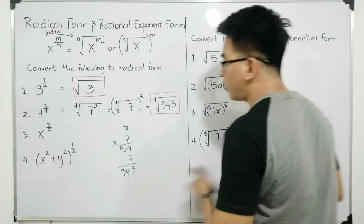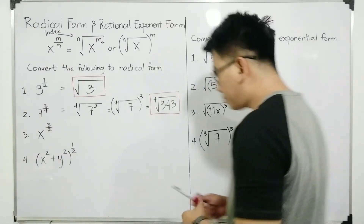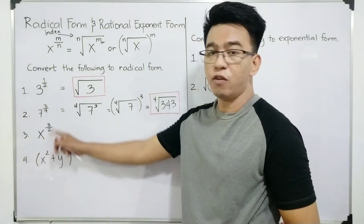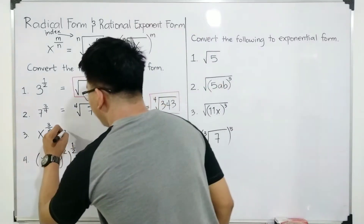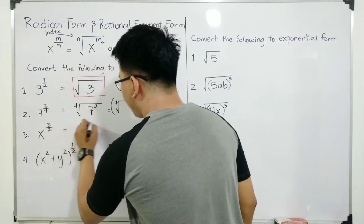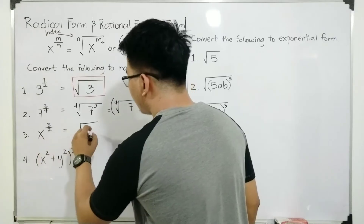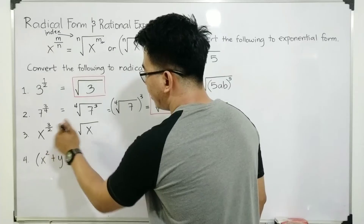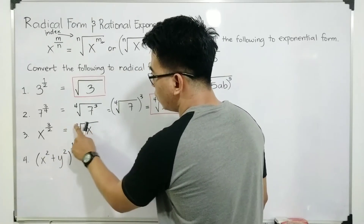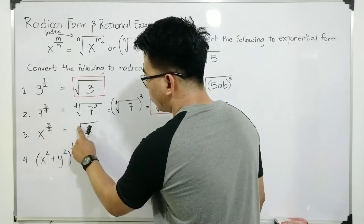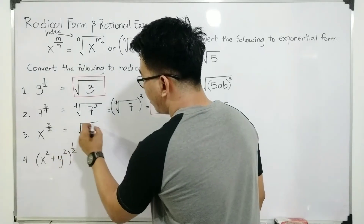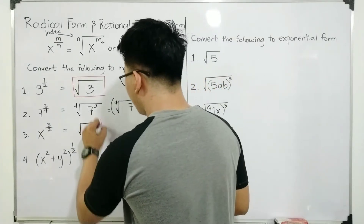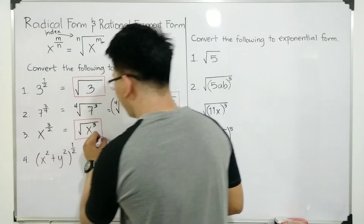Now let's move on with item number 3. We are given x raised to 3 over 2. What will happen is that you draw a radical sign. Your base will serve as the radicand x, and this is your index, which is 2. Since this is 2, you need to make this invisible. And then the numerator will serve as the exponent of your radicand. And this will be the answer for item number 3.